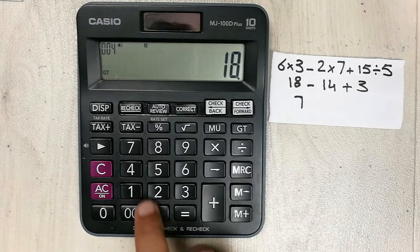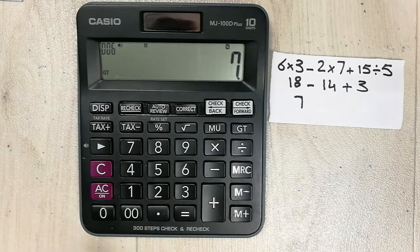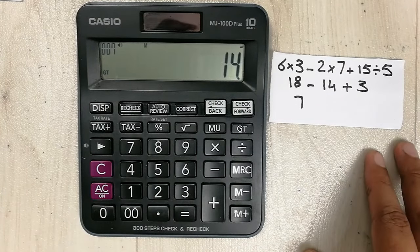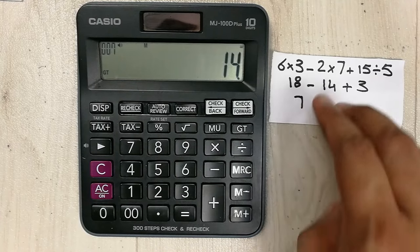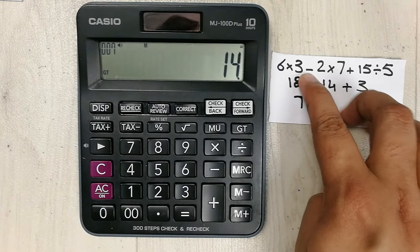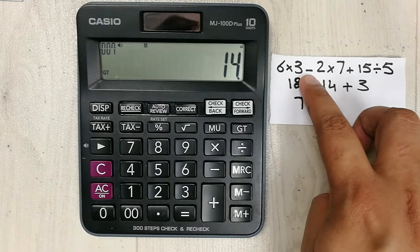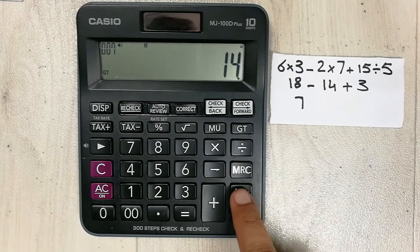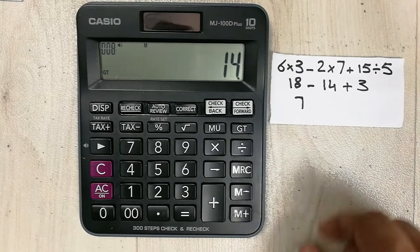Now 2 multiplied by 7 equal, and here we will press M minus because here we have negative value. You can see it is a minus sign over here, so we will press M minus.